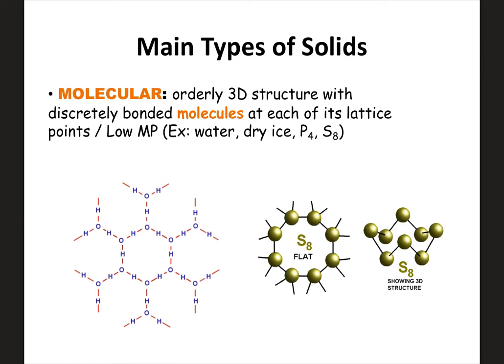Phosphorus and sulfur, which is S8, has a ring structure. They are covalent substances that can be solid — we call these molecular solids. You can get them to melt pretty easily because you're not breaking bonds, just breaking IMFs.